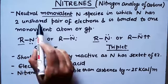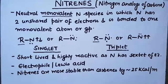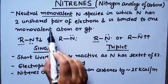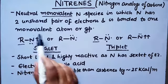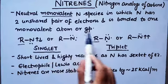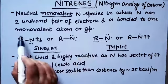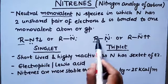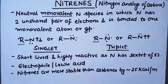Nitrenes are monovalent nitrogen species in which nitrogen has two unshared pairs of electrons. Keep your attention here — nitrogen is bonded to one monovalent atom or group.